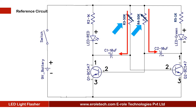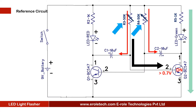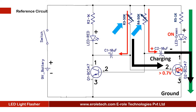Let us assume that after switching on the circuit, transistor Q2 turns on first. When Q2 turns on, it connects the negative terminal of the green LED with ground, so the green LED turns on. At the same time, one end of capacitor C2 connects with ground — the other end is already connected to the positive supply — so C2 starts charging. In the beginning, the capacitor is fully discharged and tries to draw all available current. This causes the voltage at C2 to suddenly drop below 0.7 volts. Since C2 is connected to the base of transistor Q1, Q1 turns off, and the red LED remains off until Q1 turns on again.